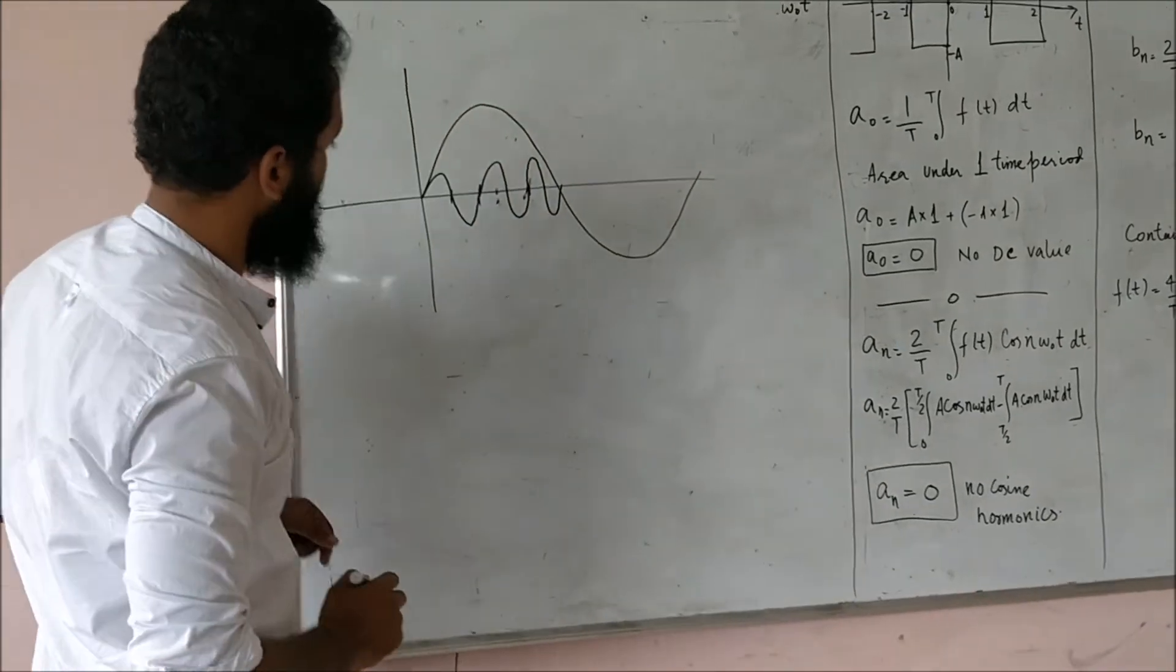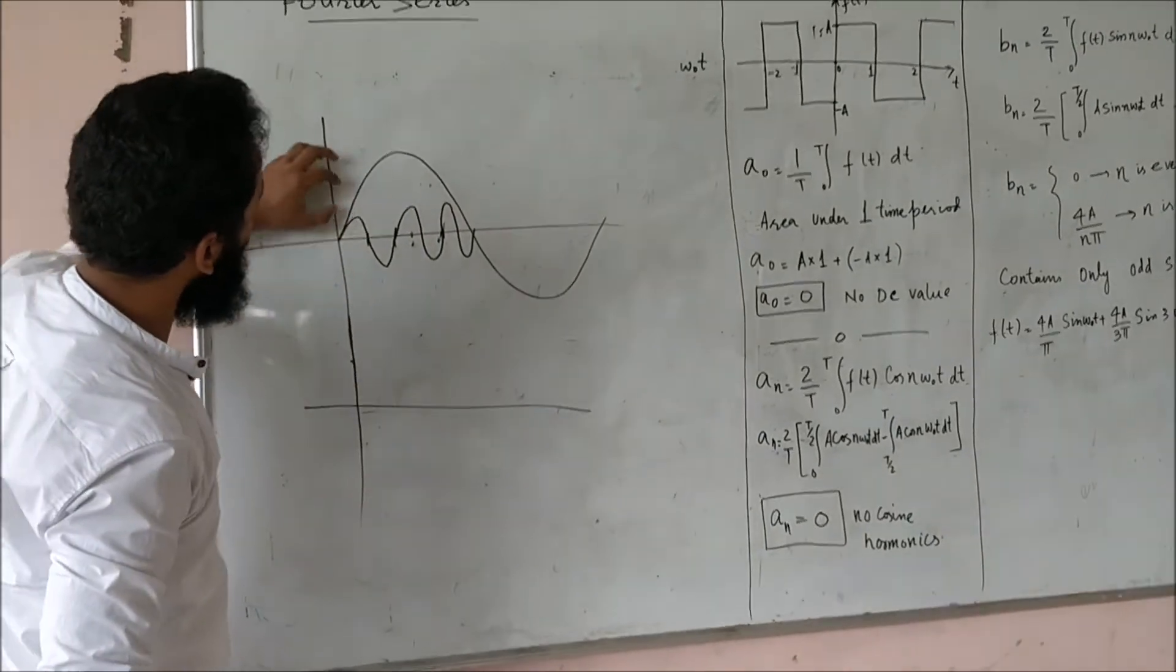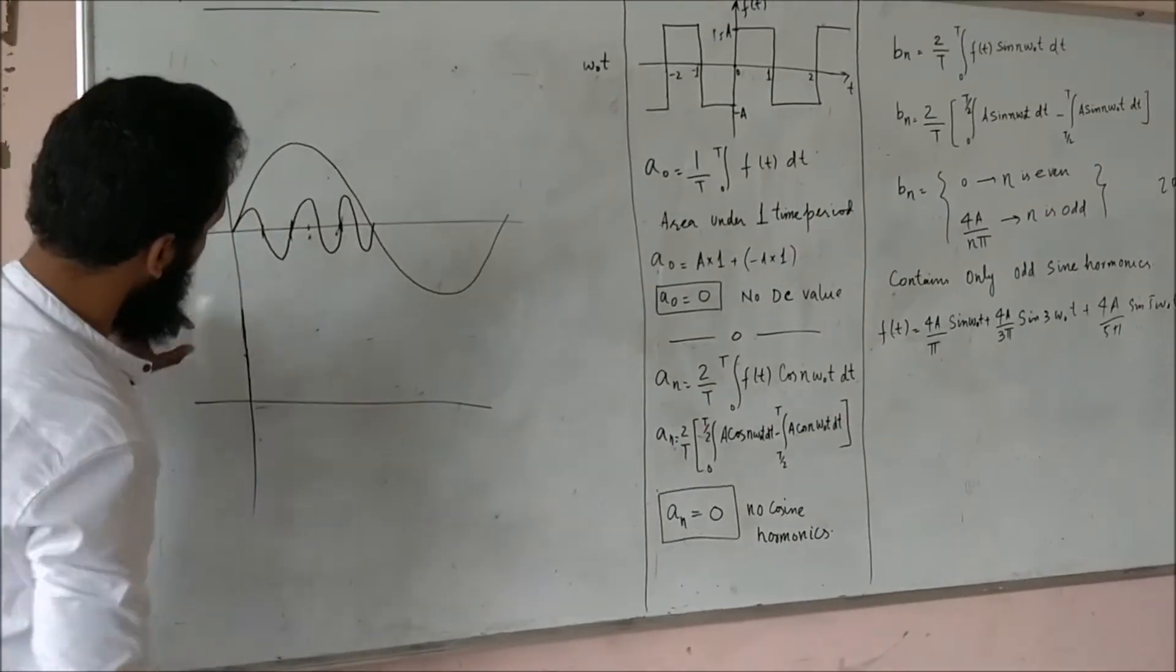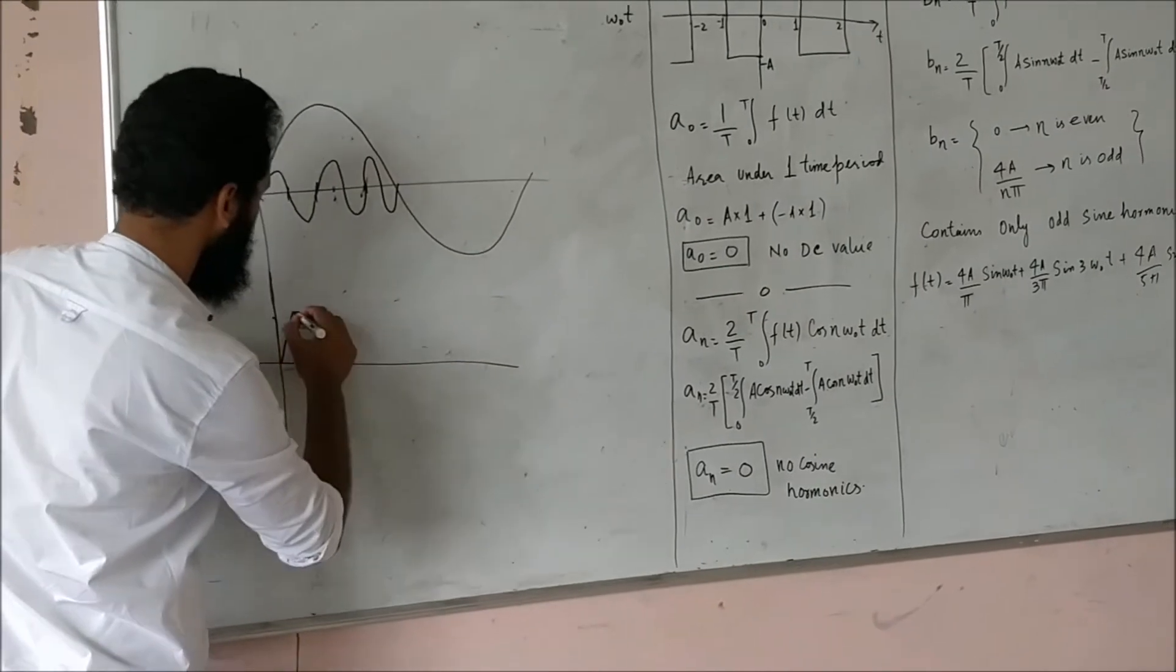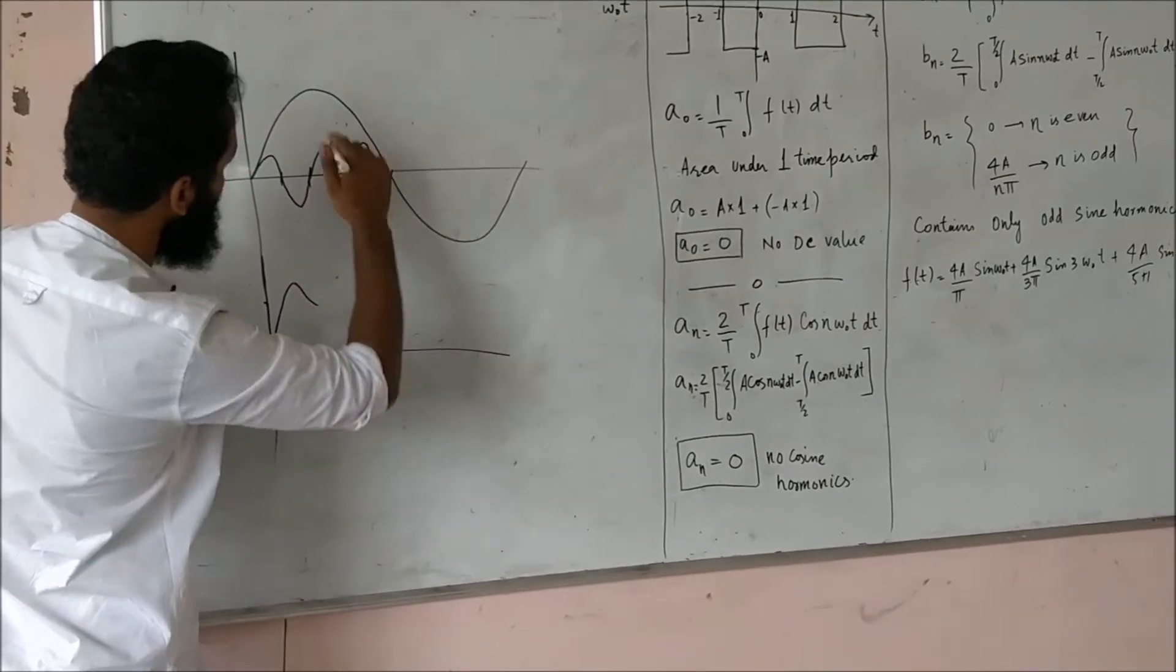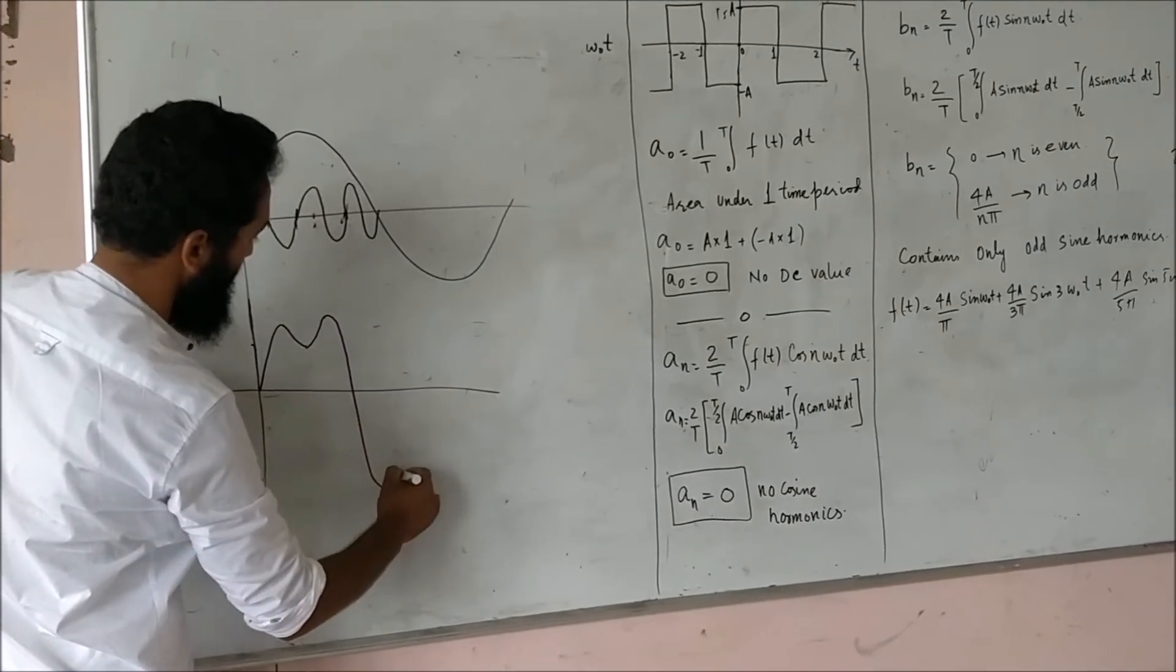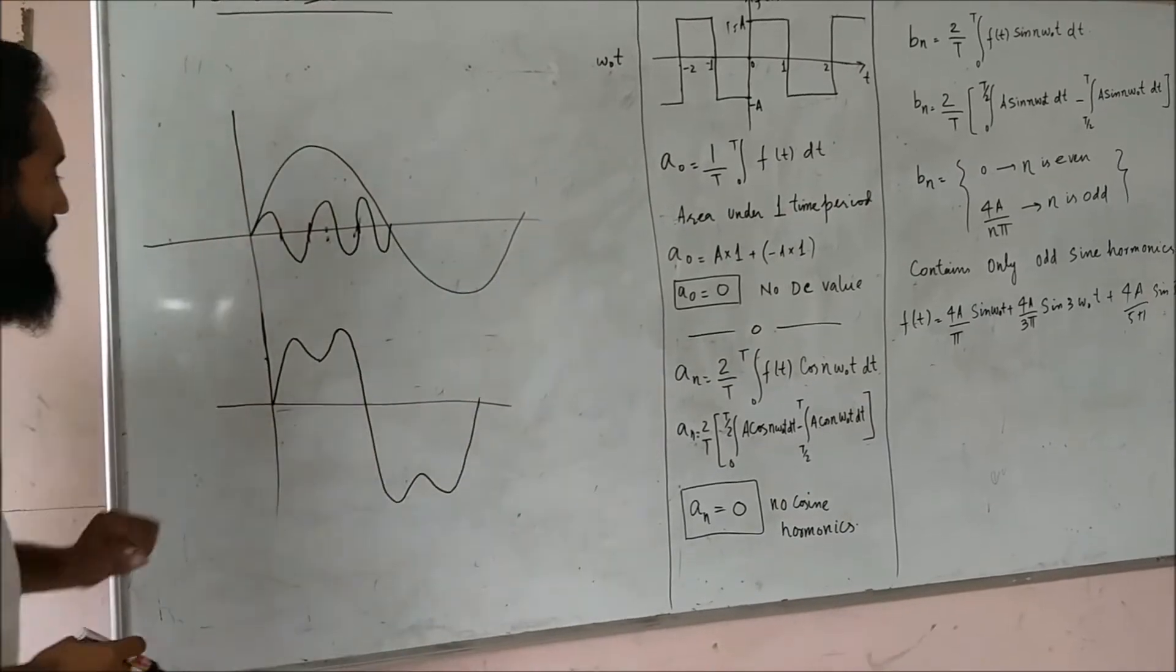Let us see what will happen to this. The resultant wave that will be formed here will be: this part of this wave will go up like this, and this part of the wave will go down like this, and another part will go up like this. A wave like this will be formed, a sawtooth wave.